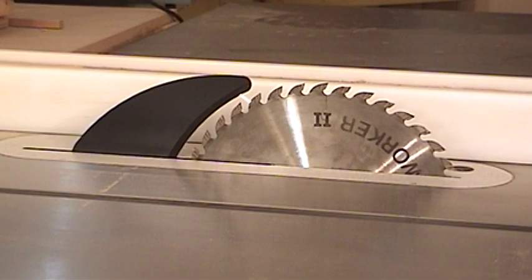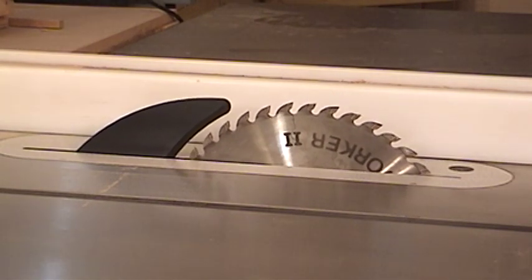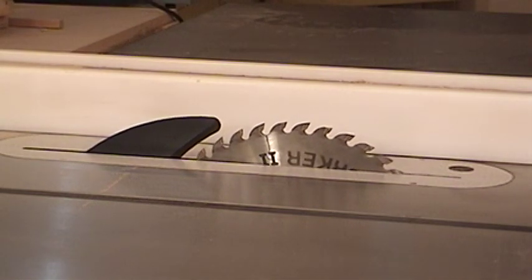Unlike the splitter, with a riving knife installed, as the table saw blade is lowered, the distance between the edge of the table saw blade and the riving knife remains constant.